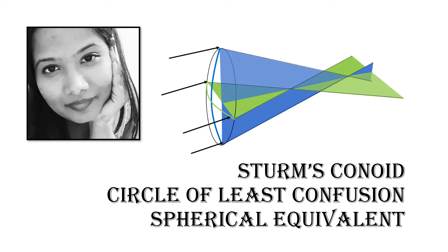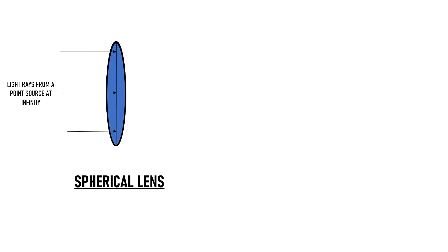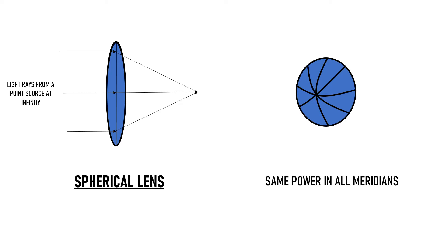When parallel rays of light coming from a point source placed at infinity pass through a spherical lens, they converge at a single point. This is because a spherical surface has the same refractive power in all its meridians, and thus all rays are refracted by the same amount to meet at a single point.